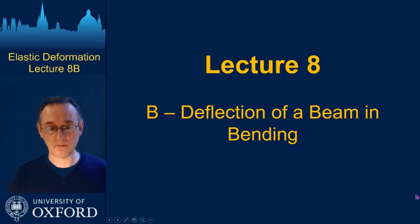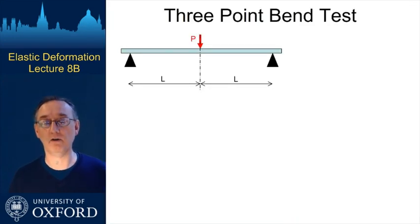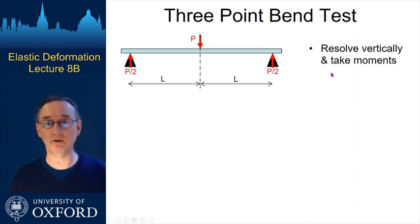So just to remind you of our three-point bend analysis, we have a geometry with two simple supports here, a span in between them that I'm going to call in total 2L. And we're just going to load it with a point load in the middle and you can work out what the reactions are at the two support points.